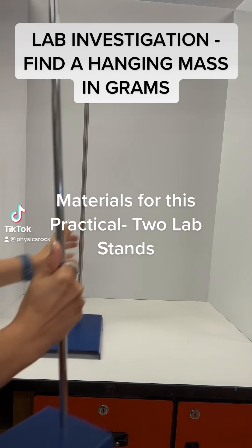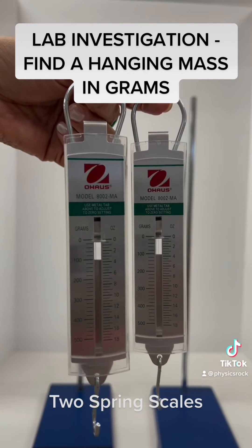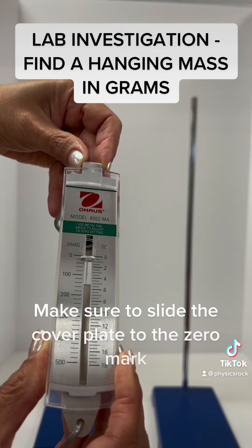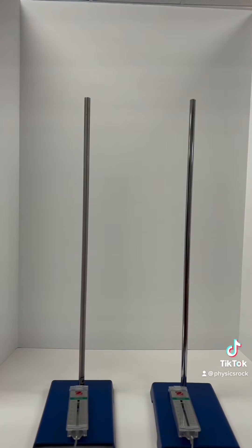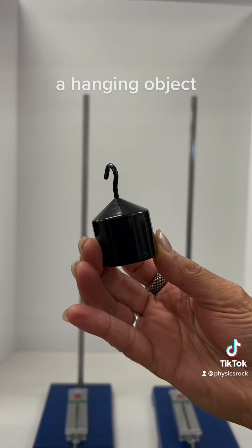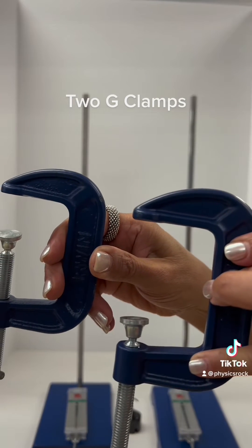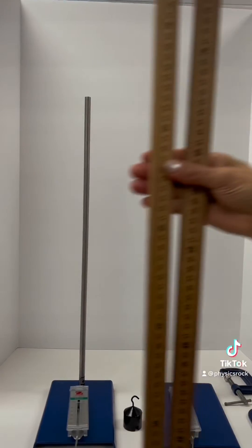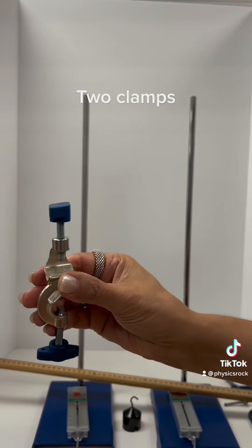Materials for this practical: two lab stands, two spring scales. Make sure to slide the cover plate to the zero mark. A hanging object, two G-clamps, two meter rulers, two clamps.